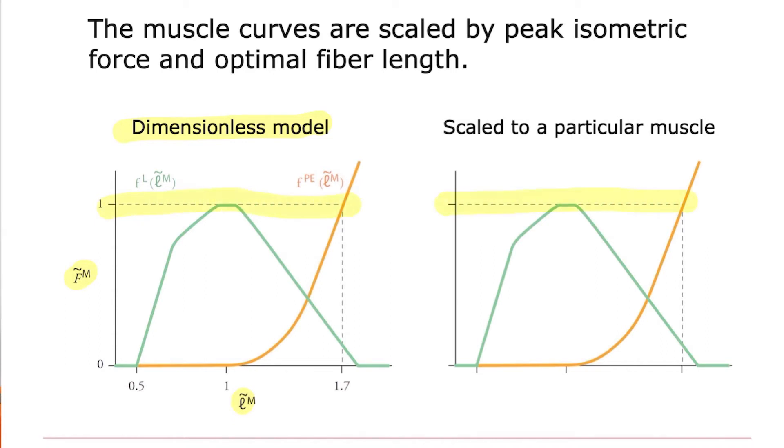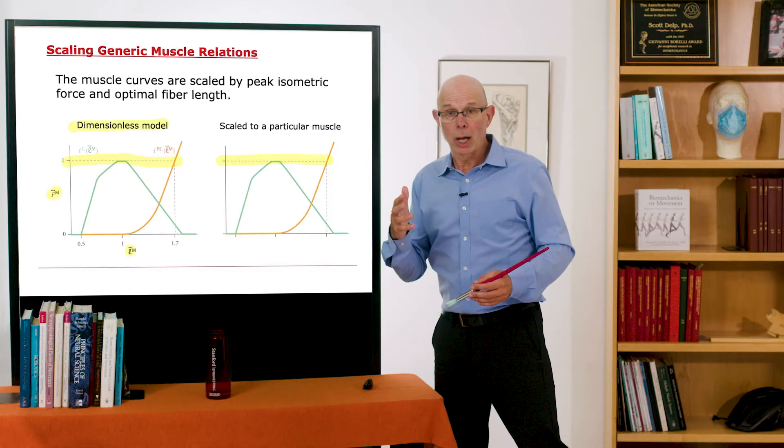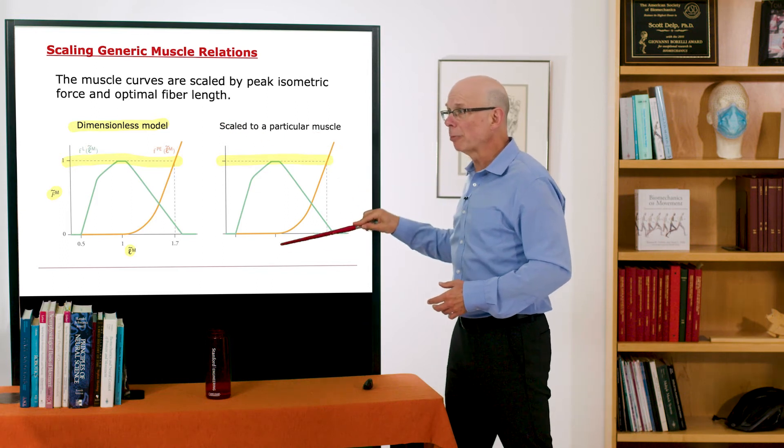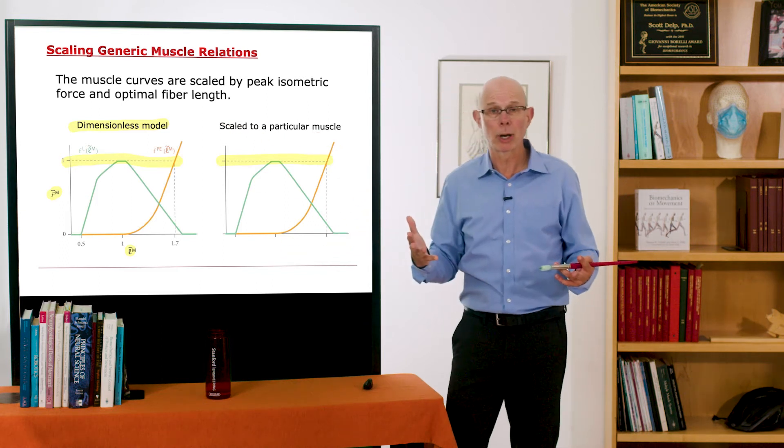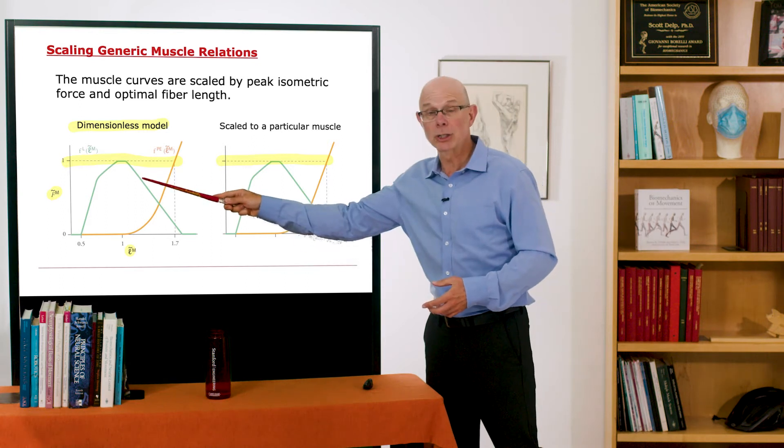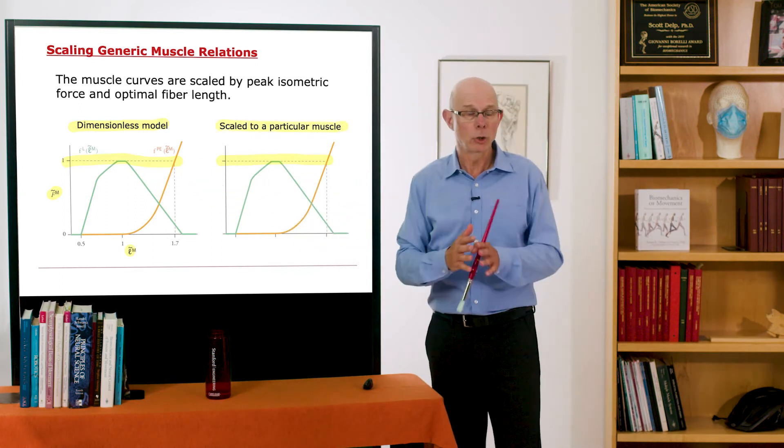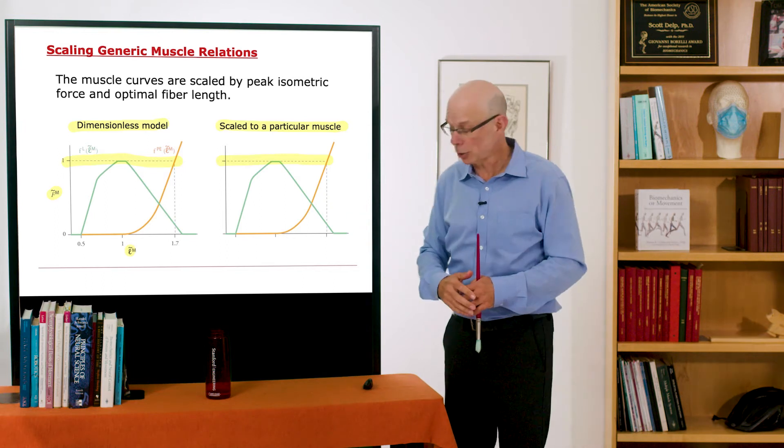So its peak force will be the physiologic cross-sectional area multiplied by the specific tension. So I'll know the peak force, I'll know the optimal fiber length. If I have those two parameters, I can take this dimensionless generic model and scale it to a particular muscle. I can do that for pretty much any muscle in the body.